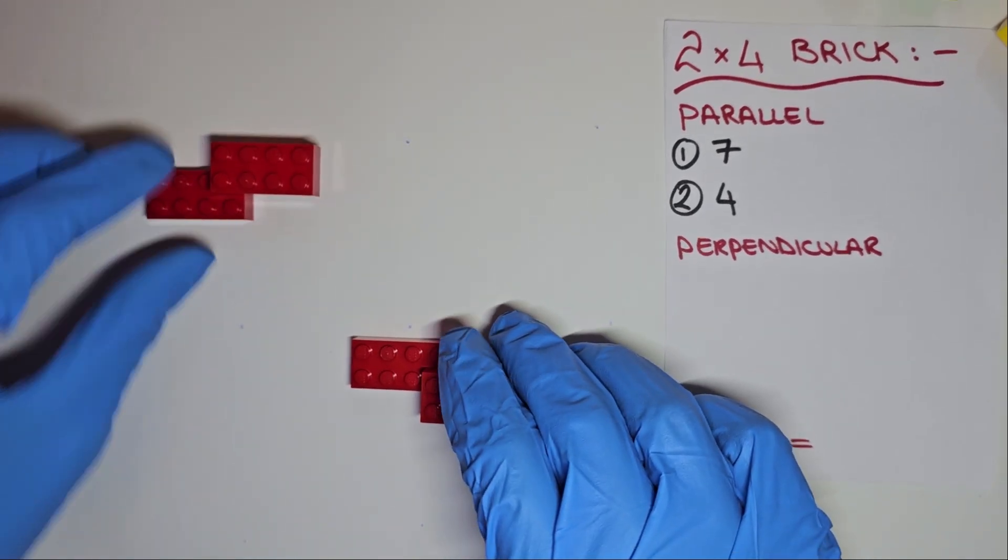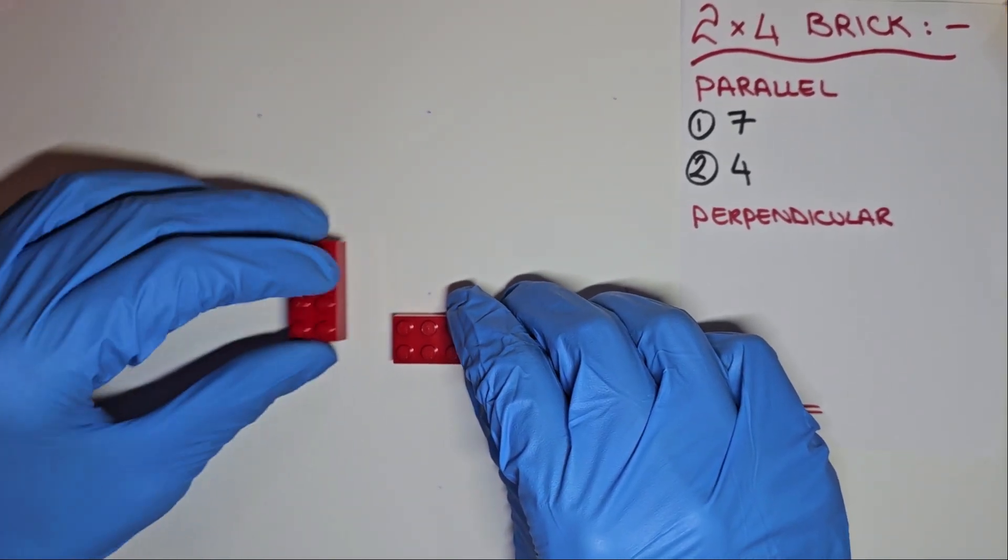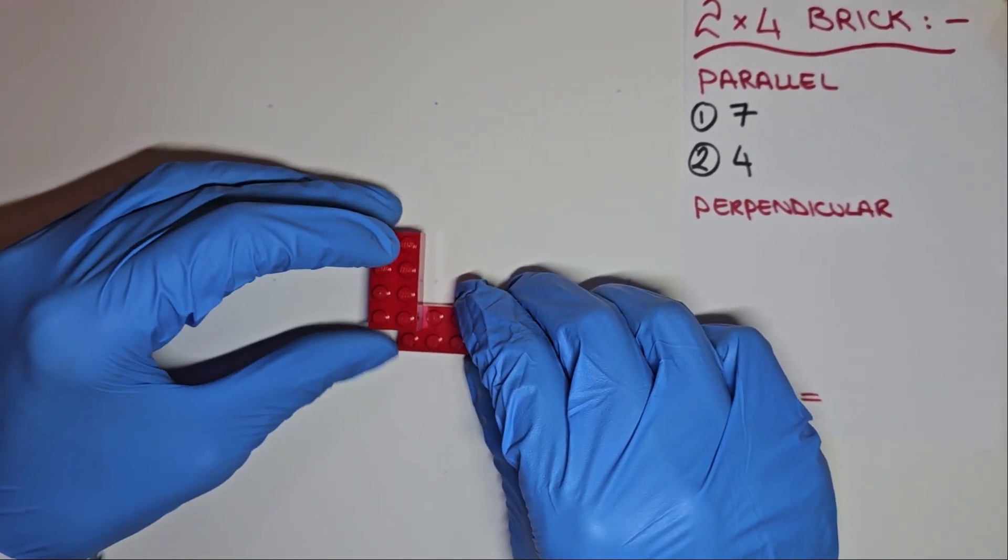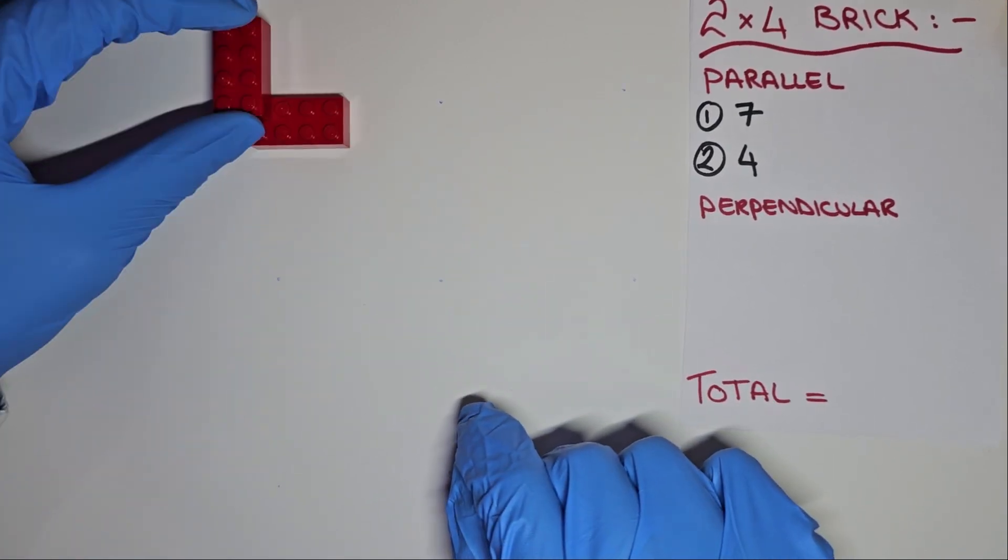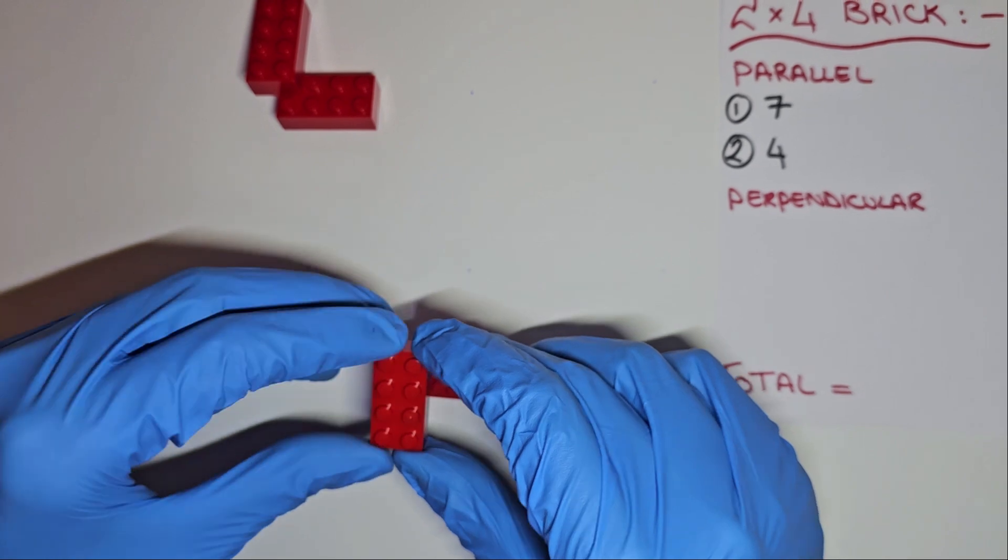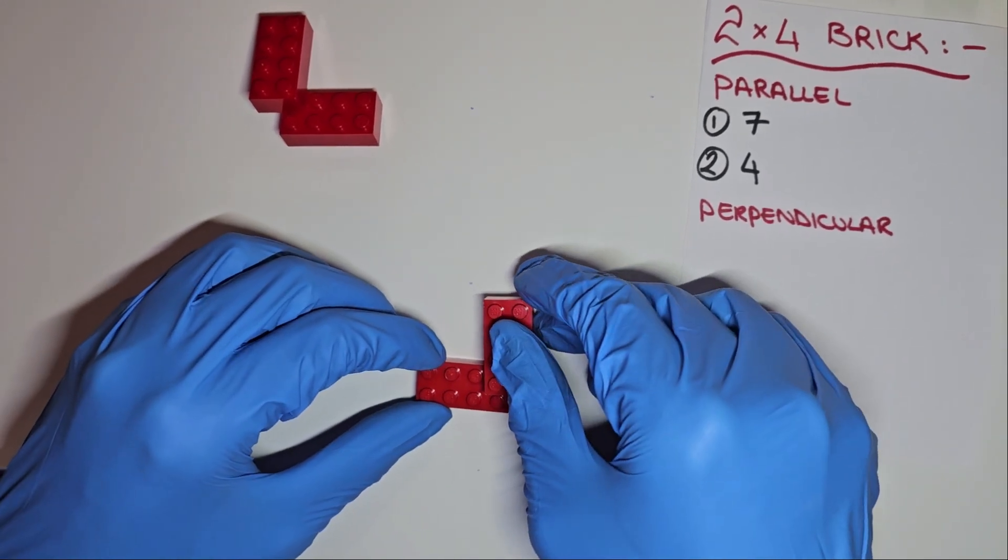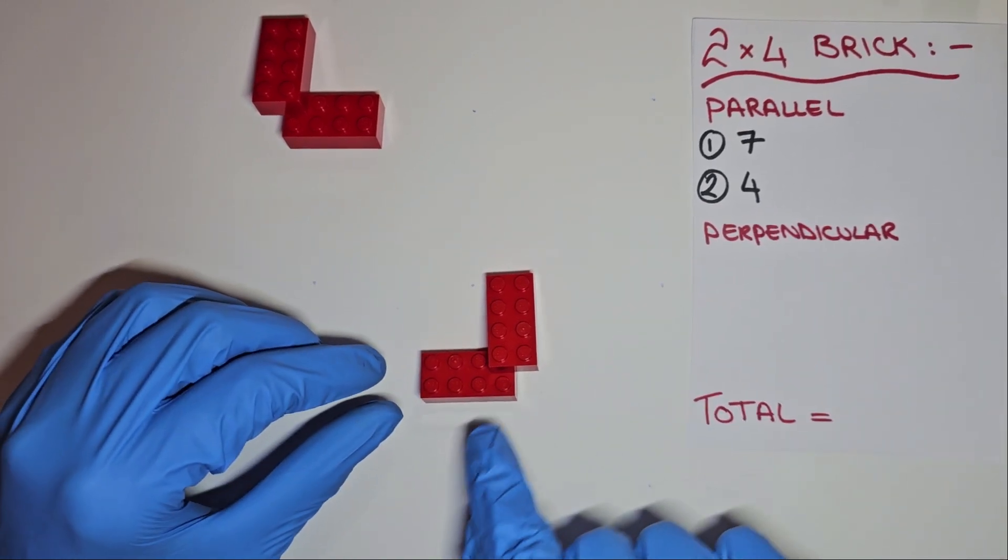Switching our top piece to perpendicular, we can start counting our other combinations. This would be our first one. Let's store this at the top. If we keep track of the last studs, we can continue clicking our way along until we reach the end, and we can also have one hangover like so. In total, we have seen five combinations on the top row.